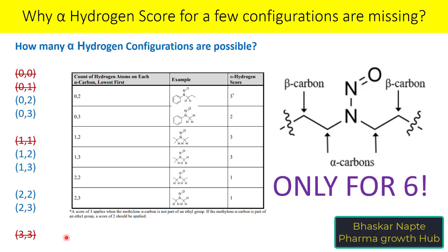So is there any reason why the alpha hydrogen score for configurations like 0,0; 0,1; 1,1; and 3,3 is not provided? Yes, obviously there is a reason, and we are going to talk about that particular reason now.